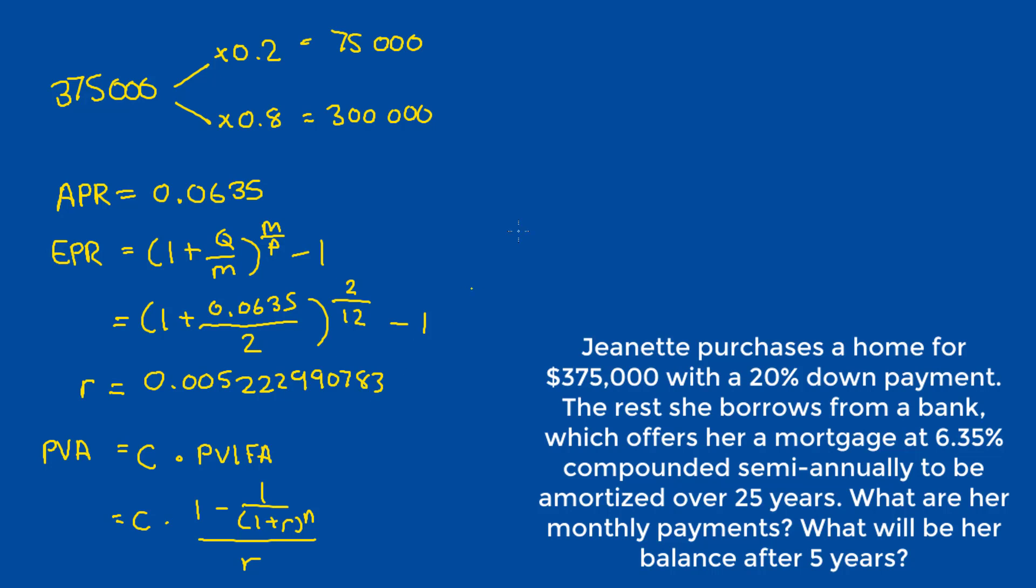And so what we're looking for in this case is the C value, or the monthly payments. So rearranging the formula to solve for C, we get present value of annuities is equal to the reciprocal of the present value interest factor of annuities, or R over 1 minus 1 over 1 plus R raised to N.